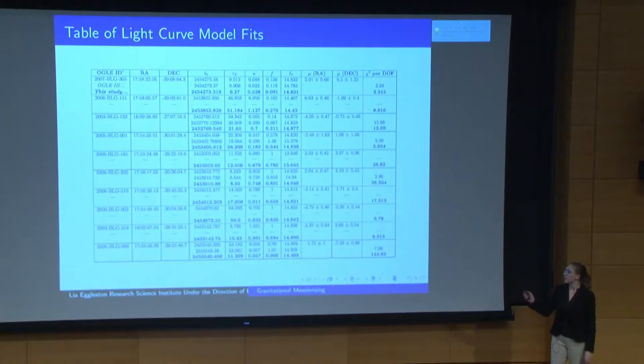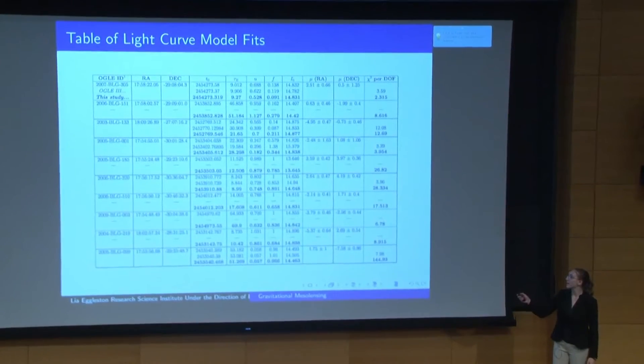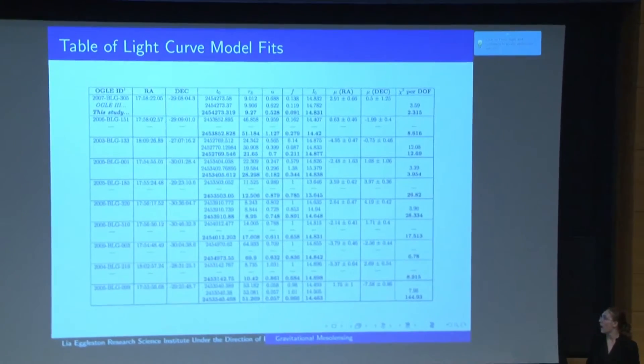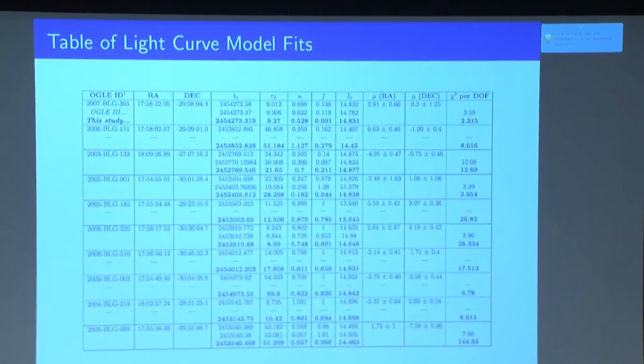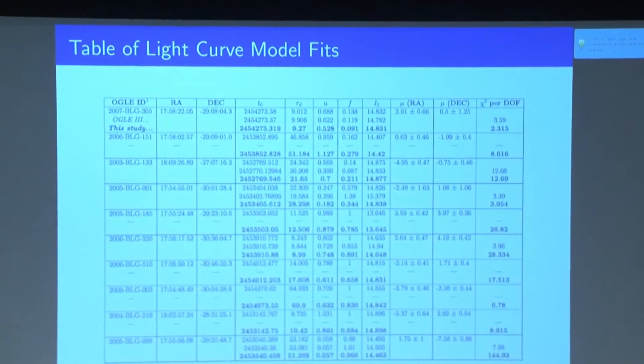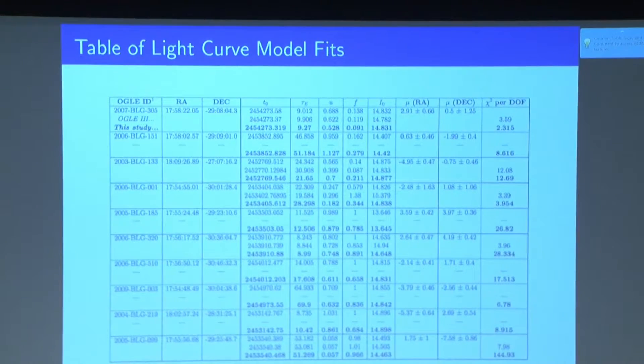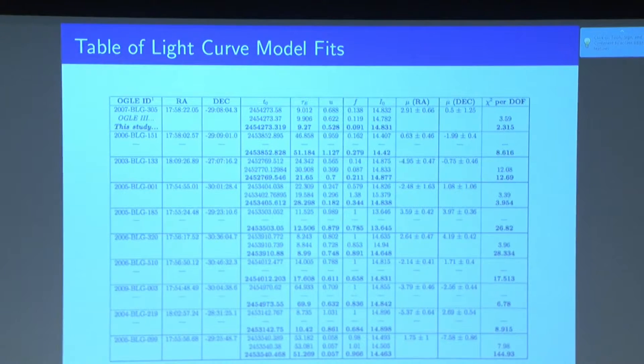So this is just an example. The 10 objects in our sample set, the bolded numbers are our model fits for the light curve, and they are comparable to previous fits that have been done on the study, on these events.